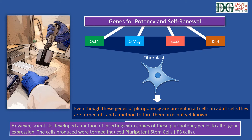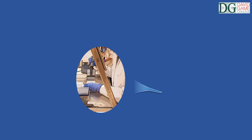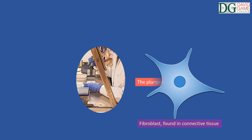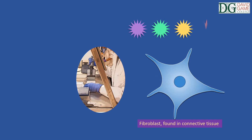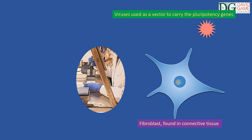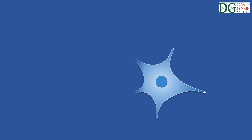The cells produced were termed induced pluripotent stem cells, or iPS cells. In one study, a type of differentiated adult cells called fibroblasts, found in connective tissue, was used. In this specialized type of cell, the pluripotency genes were turned off, and scientists used a virus as a vector to deliver the pluripotency genes OCT4, CMYC, SOX2, and KLF4. Once these genes were delivered into the fibroblasts, they were integrated into its DNA. This allowed pluripotency genes that had been switched off to be expressed again. The result was that the fibroblast was reprogrammed and reverted to a pluripotent state.